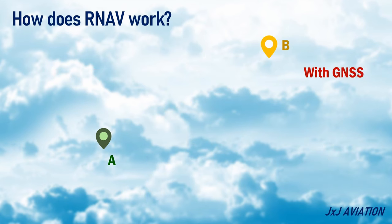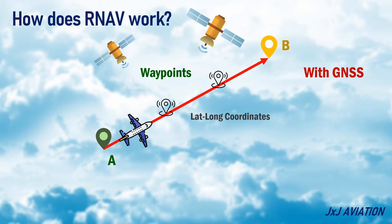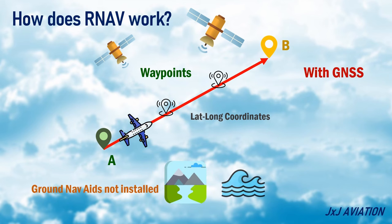With the help of GNSS, such as GPS, the waypoints can be created using specific coordinates. This means that waypoints can be created on routes where ground-based nav aids cannot be installed, which may be due to terrain or over oceans.